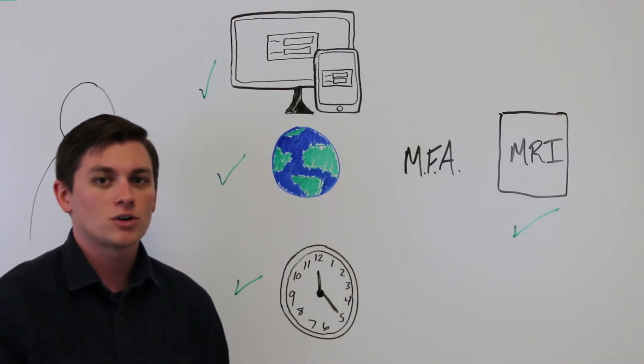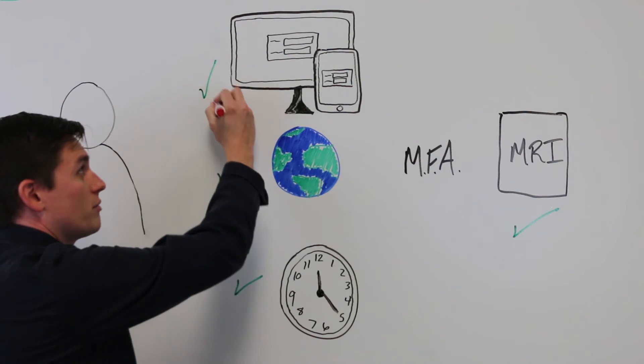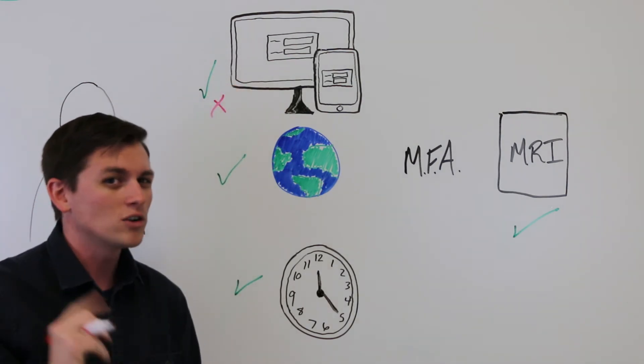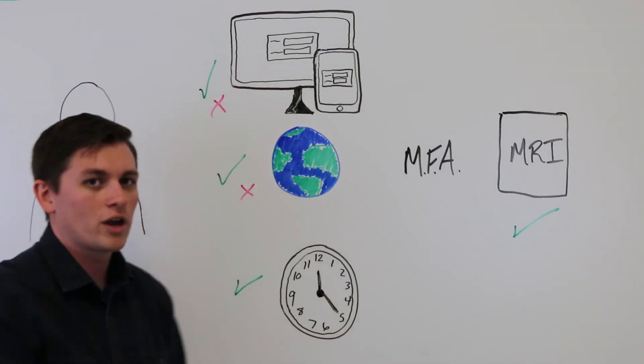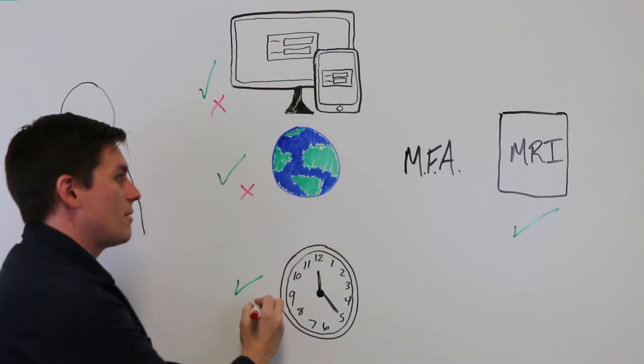Now if somebody got a hold of Jane's credentials, chances are they're not using it from the same computer that she's doing. They're also not using it from the same geographical location, maybe not around the same time either.